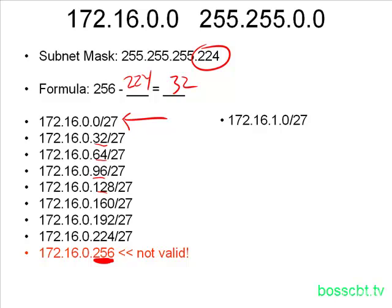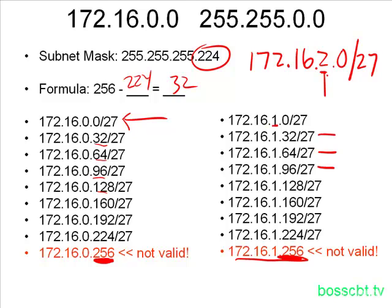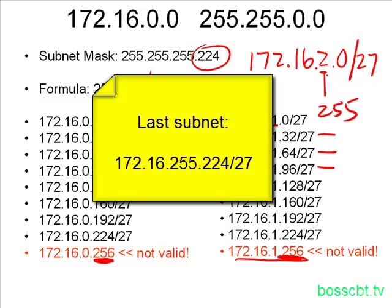When you get to the end, when you get to this invalid number, you start over again. But this time, you increase the third octet by one. And then, you just repeat the process all over again. We have 32, 64, 96, all the way up until we reach our invalid number again, 256. And then, we keep going. But now, the third octet becomes two. We keep repeating this process until the third octet becomes 255. Here is the very last subnet number in the range of all the subnets we've created: 172.16.255.224.